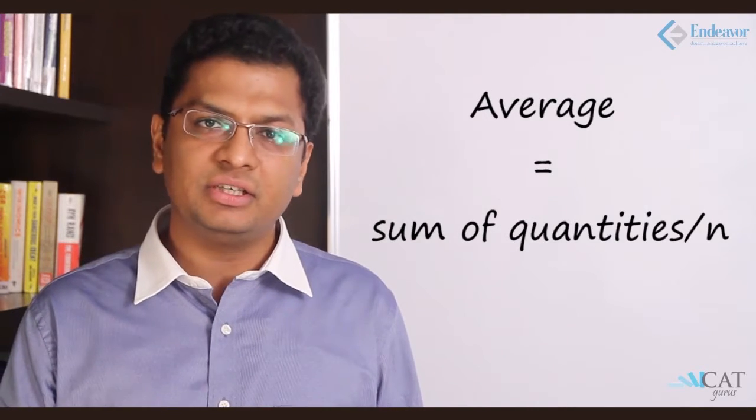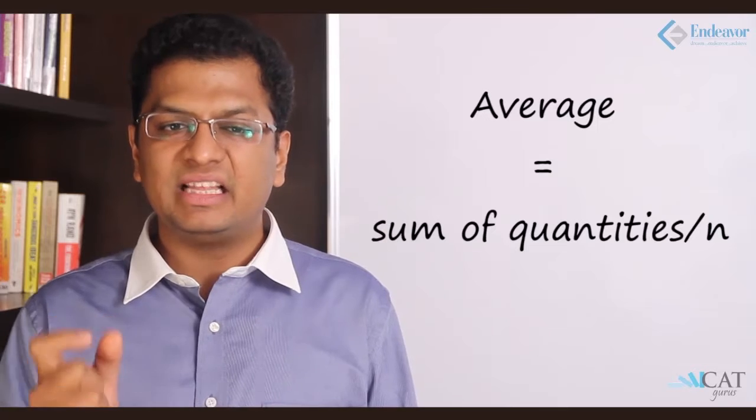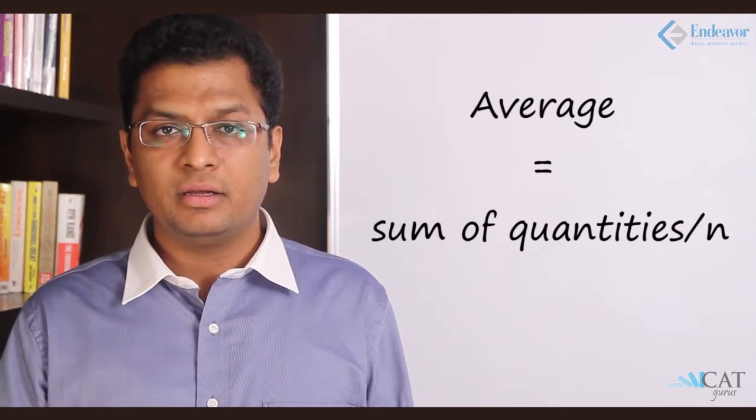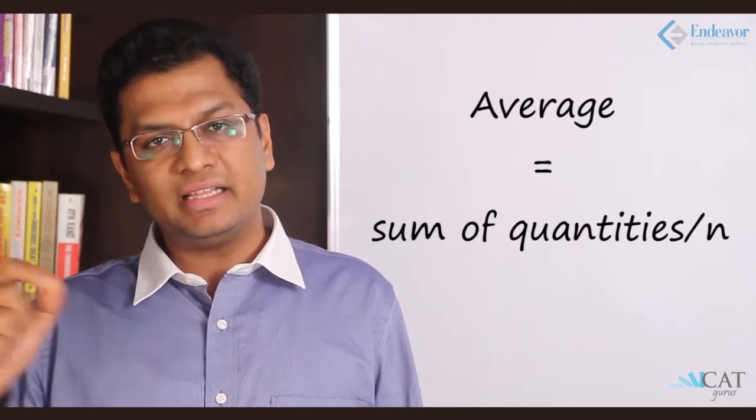Average is nothing but if we have say 10 people having 10 different marks, we sum it up and divide by the total number of people. So, sum of all the quantities under consideration divided by number of quantities—that is average. This is also called the arithmetic mean.